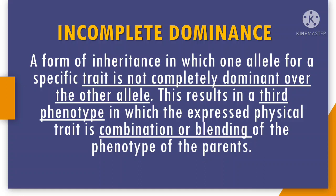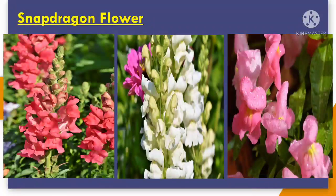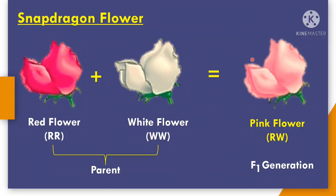This is a snapdragon flower. We have different colors of flower such as red, white, and pink. This is an example of incomplete dominance in which both alleles are present, resulting in an intermediate phenotype.